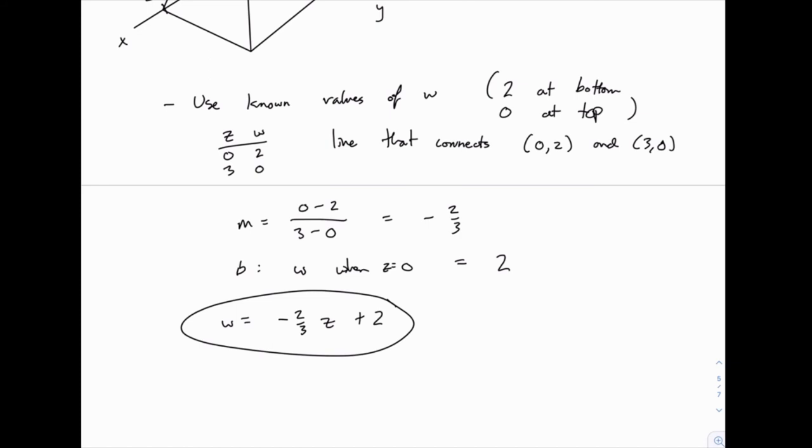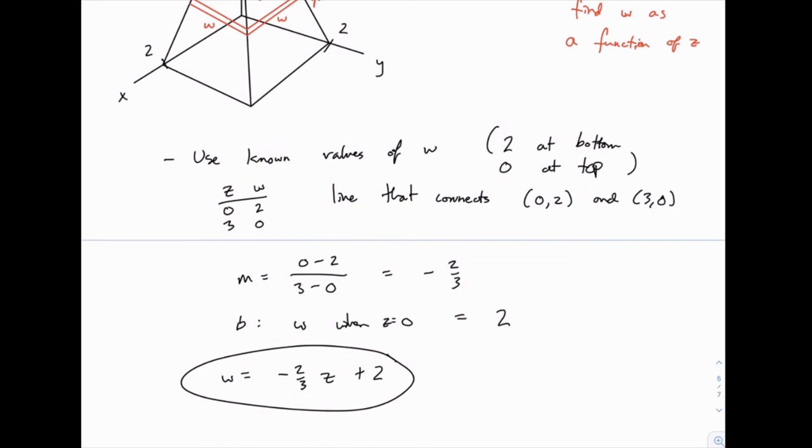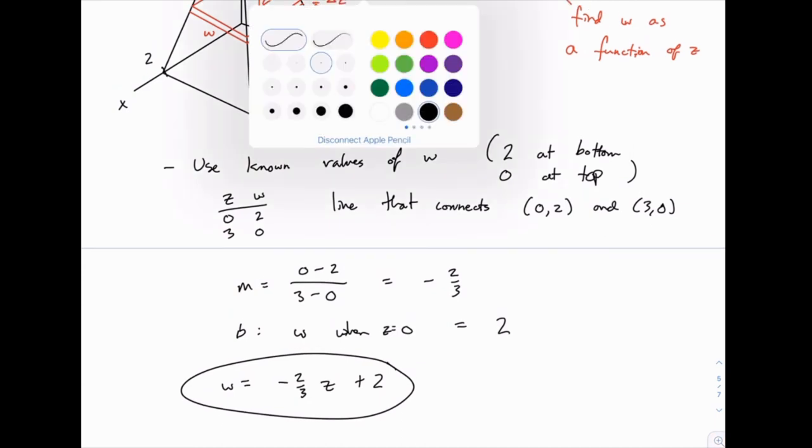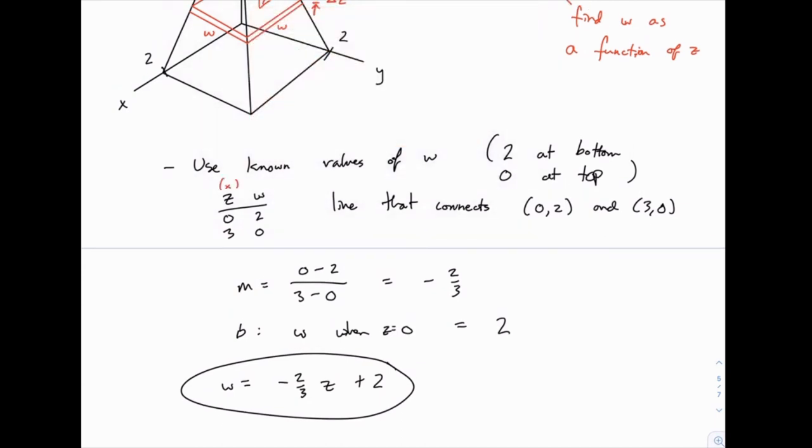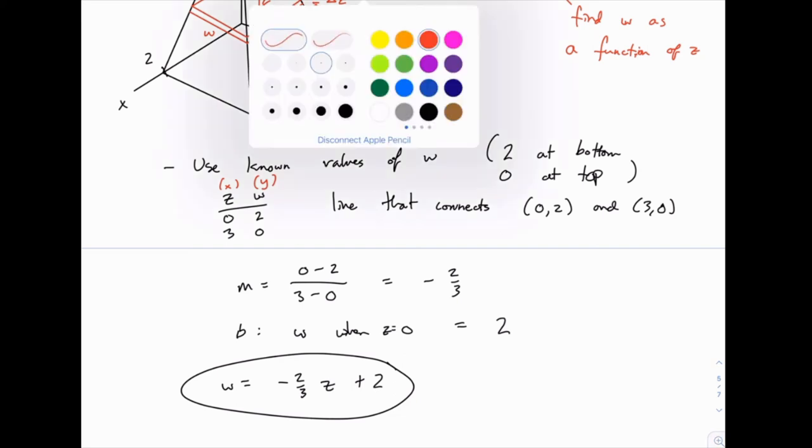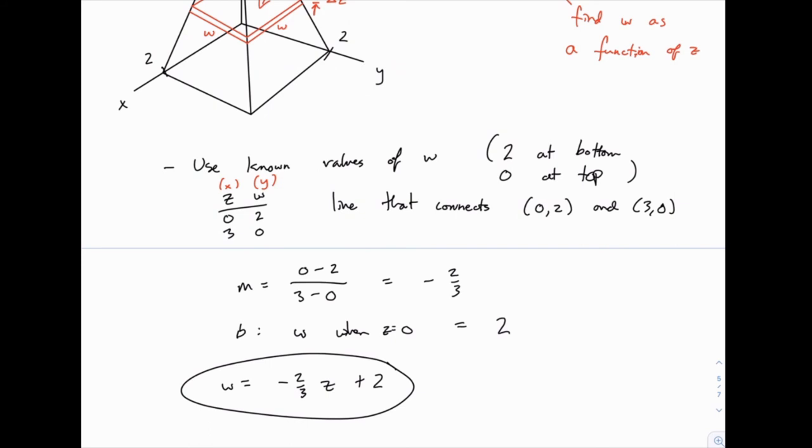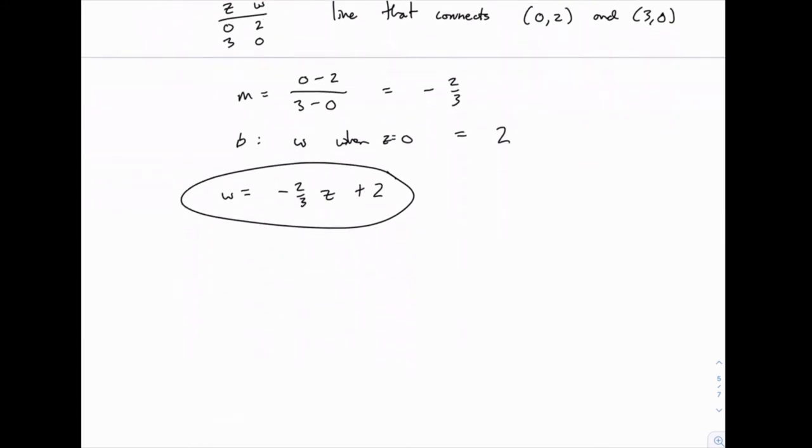So that's kind of the algebraic approach to the solution of how to find w as a function of z. As you kind of think of your z values like x and your w values like y, and you find the line that connects those two known values. There's another approach, if you tend to think more in geometric terms, we can use what are called similar triangles.